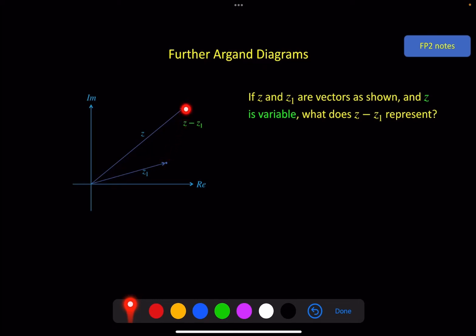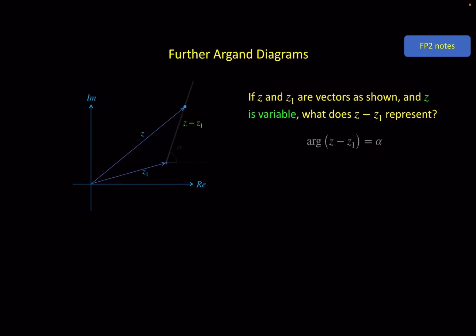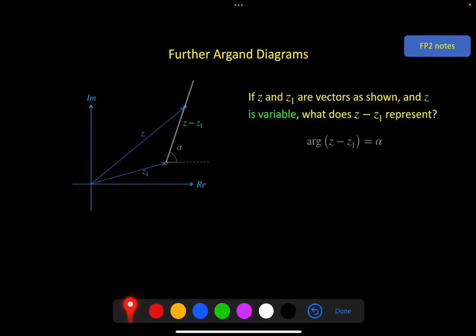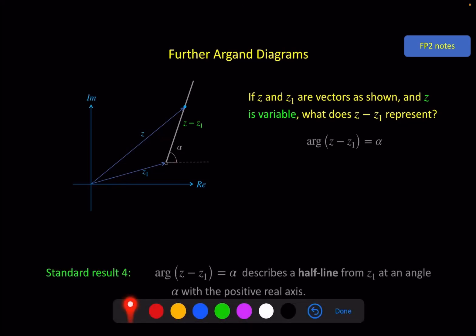From z1 to z. Now if we take the argument of that vector, which is the angle it makes with the positive real axis, and we fix that as a constant alpha, what we get is a half line from z1 going this direction. It goes further in this direction, but it does not go in this direction. So it starts here and goes up. So this is our fourth standard result.